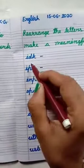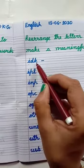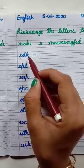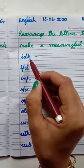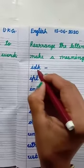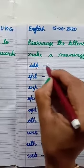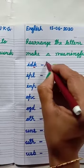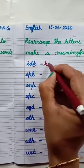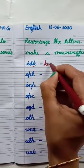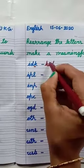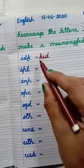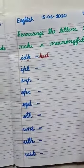Students, the letters are I, D, K. First, I have written K, then I, then D. K, I, D — KID.